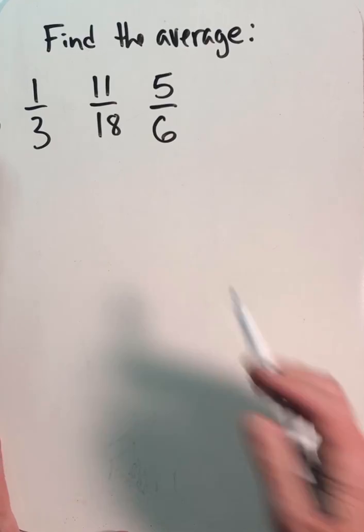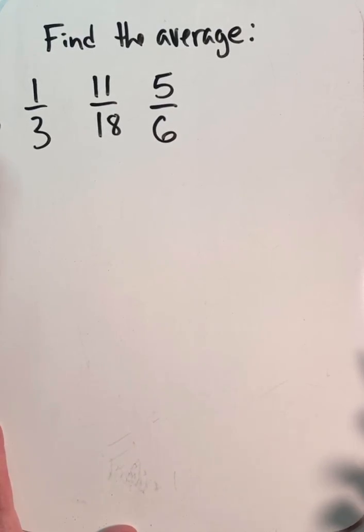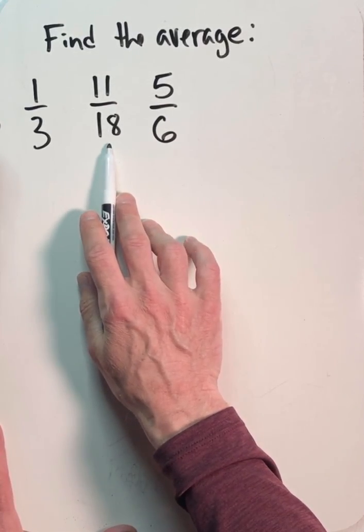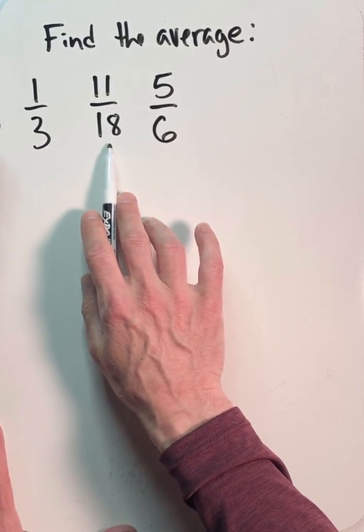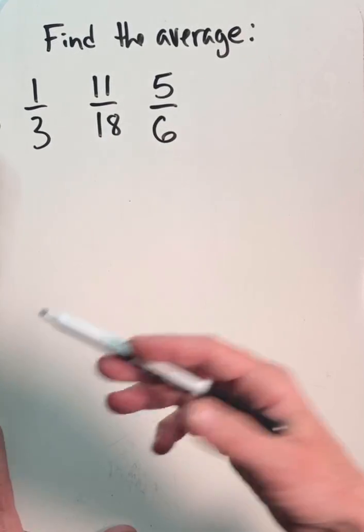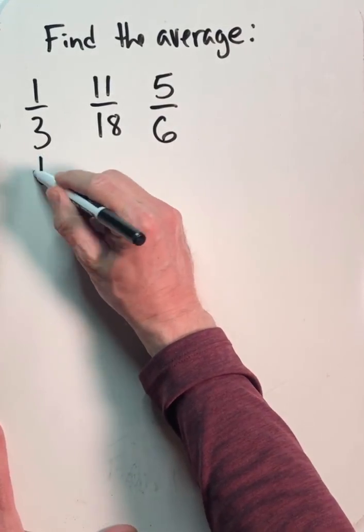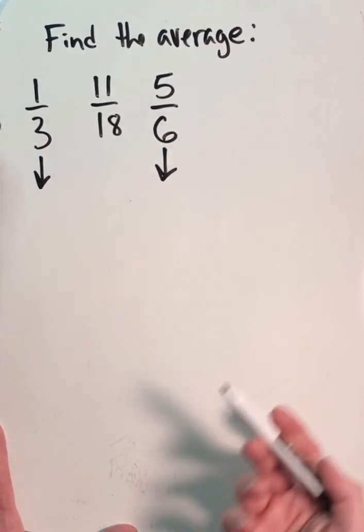Now, in order to add fractions with different denominators, we have to find a common denominator. And fortunately, it's right here. 3 is a factor of 18, and 6 is a factor of 18, so we can use 18. So we would need to convert the other fractions into 18ths.